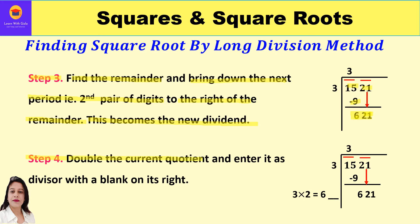In step 4, double the current quotient and enter it as the divisor with a blank on its right. The current quotient is 3; doubling it gives 6. We write down 6 and leave a blank to the right side of 6.